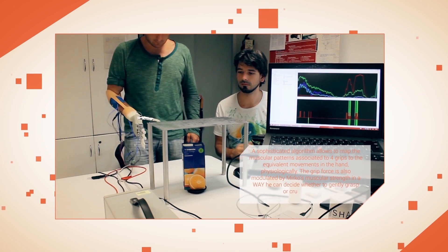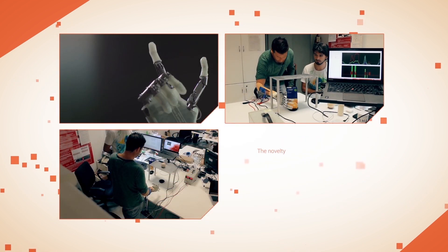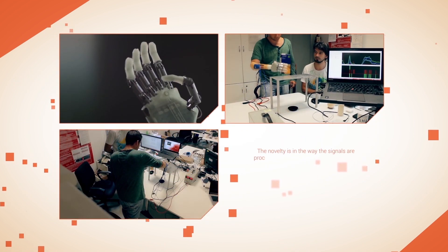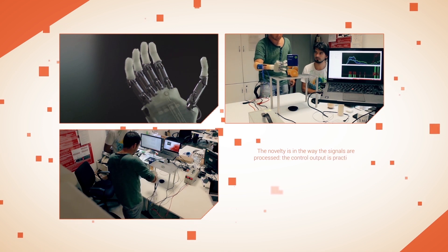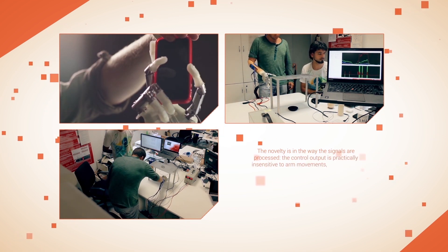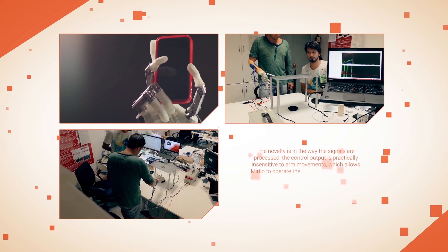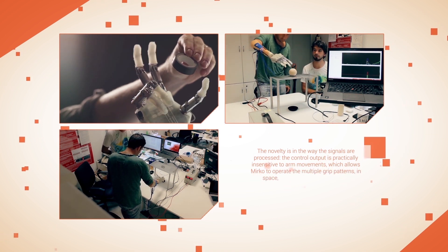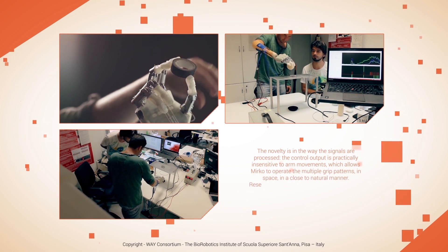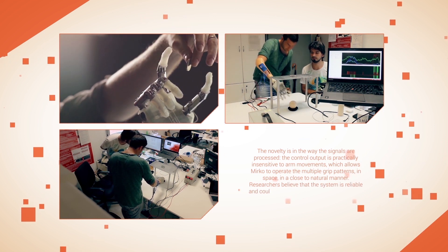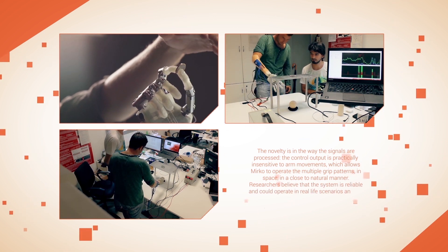Physiologically, the grip force is also modulated by Mirko's muscular strength, so he can decide whether to gently grasp or crush an object. The novelty is in the way the signals are processed. The control output is practically insensitive to arm movements, which allows Mirko to operate the multiple grip patterns in space in a close to natural manner. Researchers believe that the system is reliable and could operate in real-life scenarios, not just inside a laboratory.